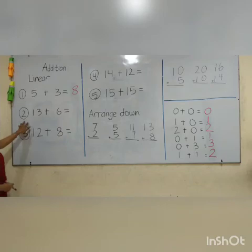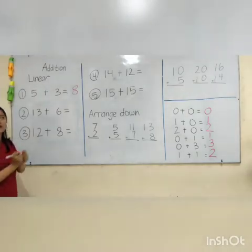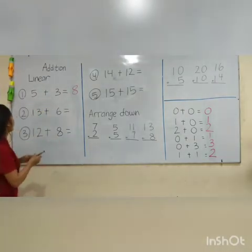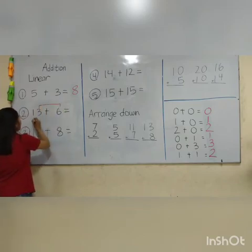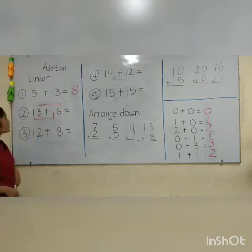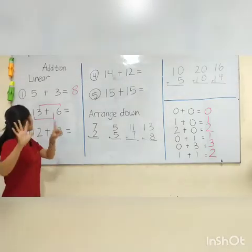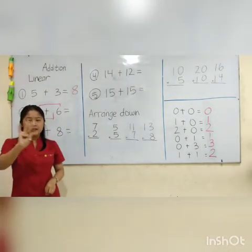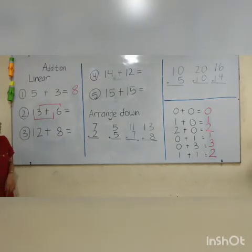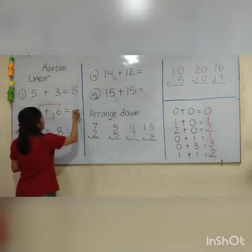Now let's continue to number 2. 30 plus 6 equals. Because I have 2 digits and 1 digit, let's draw a line first — in front with in front, behind with behind. So I will draw a line: behind with behind, and in front with in front. Now let's count: keep 3 inside my mouth, open 6 fingers. After 3: 4, 5, 6, 7, 8, 9. Let's write down 9. The position must be behind, because we are counting the behind number. So the answer goes behind: write down 9.